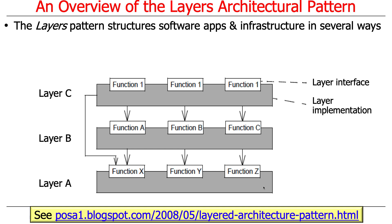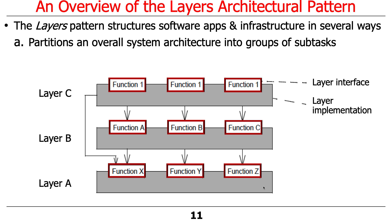The layers pattern structures software applications and infrastructure, usually combining them together in a couple of different ways. As you can see in this diagram illustrating layering as a software architecture style or pattern, it partitions the overall system into groups of subtasks or services. These services are exposed through some kind of functional interface — usually methods or functions. Things in layer C depend on stuff in layer B, and stuff in layer B depends on stuff in layer A. That's a nice layered design.